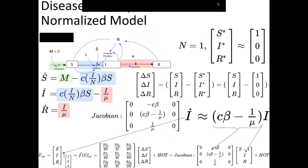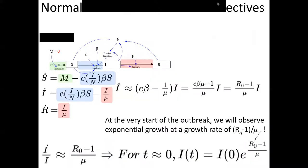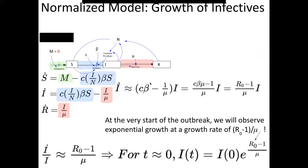This is a constant — C×beta minus one over mu — it's just a scalar number. Does anyone recognize what sort of behavior I-dot equals some constant alpha times I gives rise to? Exponential growth! The rate of exponential growth is alpha — it's C×beta minus one over mu. Rearranging, this is equal to (C×beta×mu minus 1) over mu. And guess what this is — does anyone recognize this from the SIR model? It's R-zero. It's the basic reproductive number.